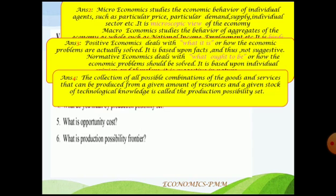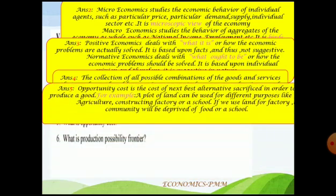Fifth two-mark question: what is opportunity cost? It is the cost of the next best alternative sacrificed in order to produce a good. For example, a plot of land can be used for agriculture, constructing a factory, a school, or a swimming pool. But if you use that land for a factory, the community will be deprived of food or a school. Every wise producer should calculate this opportunity cost — the next best alternative being sacrificed.